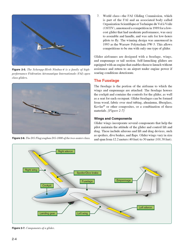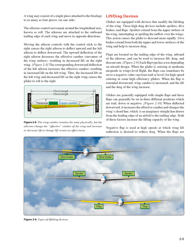Wings and Components. Glider wings incorporate several components that help the pilot maintain the attitude of the glider and control lift and drag. These include ailerons and lift and drag devices, such as spoilers, dive brakes, and flaps. Glider wings vary in size and span from 12.2 meters (40 feet) to 30 meters (101.38 feet). A wing may consist of a single piece attached to the fuselage to as many as four pieces on one side. The ailerons control movement around the longitudinal axis, known as roll. The ailerons are attached to the outboard trailing edge of each wing and move in opposite directions.